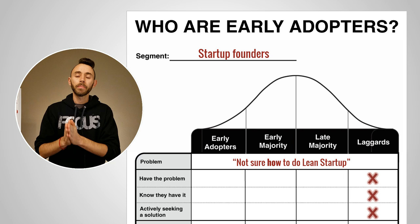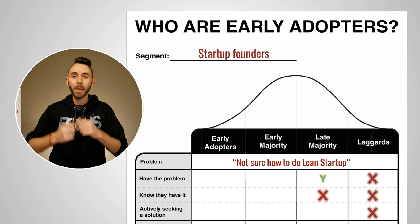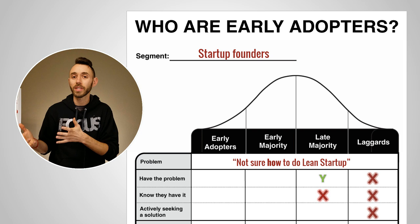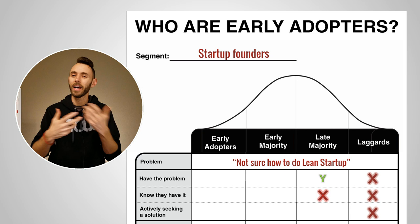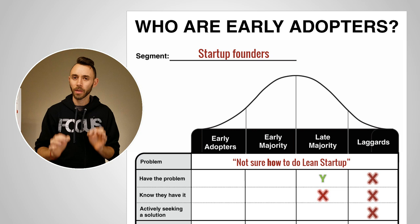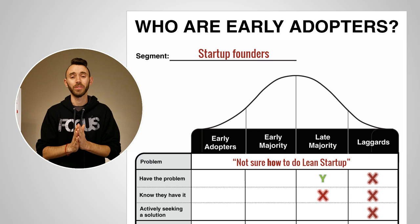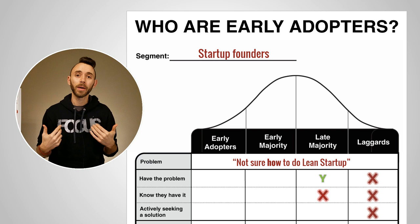When you compare that to the late majority, these are people who have the problem but don't know that they have it. In our example, this might be someone who considers themselves lean because they don't have a lot of money, have a very small team, or uses the word MVP as synonymous for beta. If you ever feel like you have to educate your customers about the problems they have, you're probably talking to a late majority. These are the hardest people to sell to, because you have to spend all your time convincing them they have a problem they don't even know about — and since they don't know, they're not actively seeking a solution.